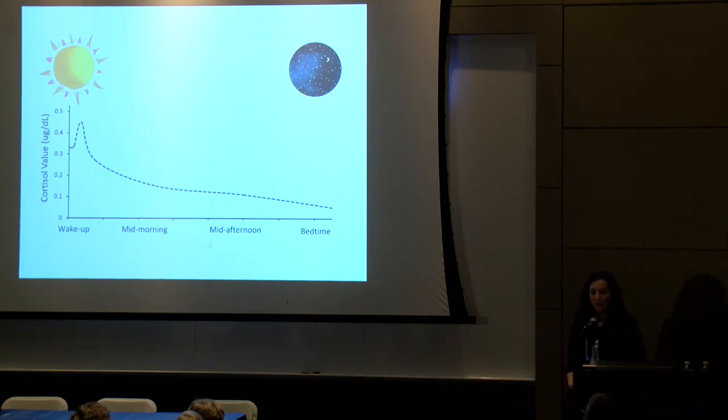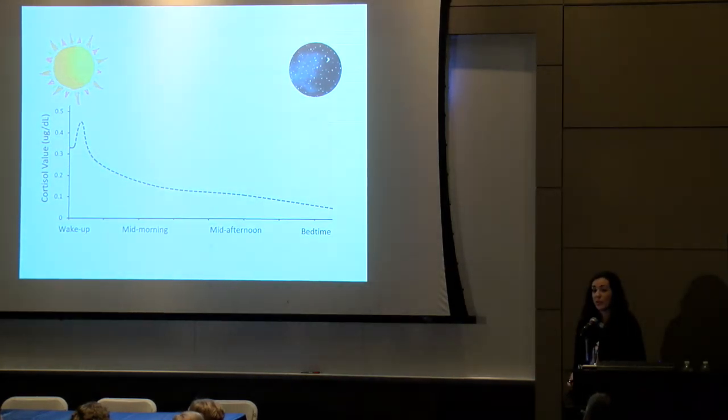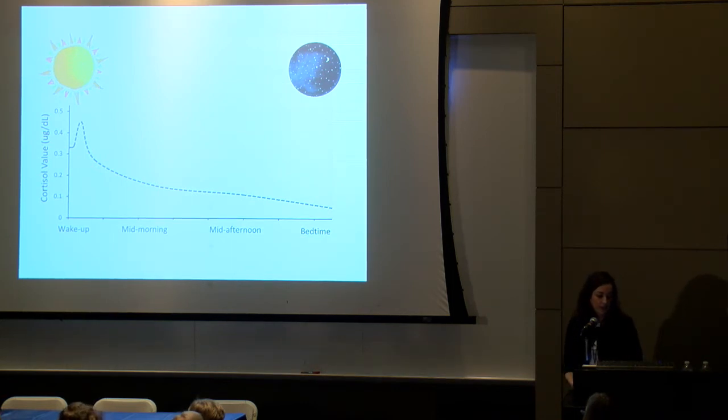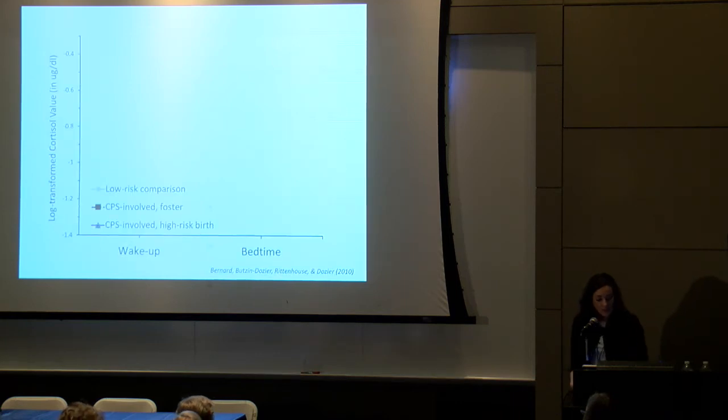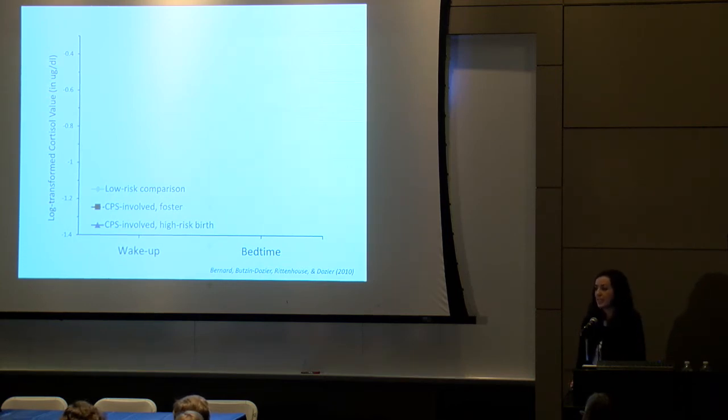One question we've asked is how does stress interfere with this healthy rhythm of cortisol? What happens when a child is exposed to chronic stress or some of those different types of adversity that I highlighted? In one study, we collected saliva samples from babies under three, infants and toddlers who had experienced varying levels of stress in their home environments.